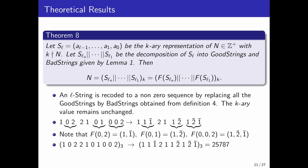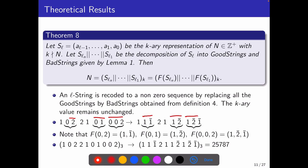For an example, we have this sequence 1, 0, 2, 2, 1, 0, 1, 0, 0, 2, where we can clearly identify 0, 2, 0, 1 and 0, 0, 2 are the bad strings. So these bad strings can be removed by applying the function f and obtaining the good strings 1 minus 1, 1 minus 2, and 1 minus 2 minus 1. And after this sequence being recoded, the k-ary value is unchanged.